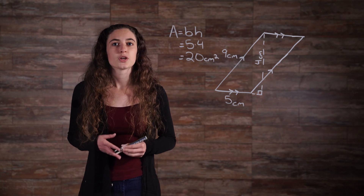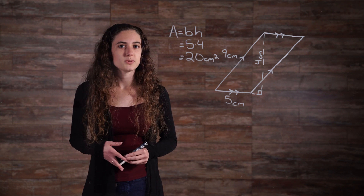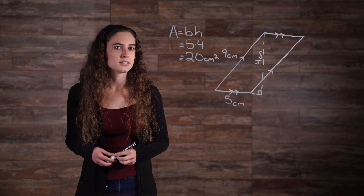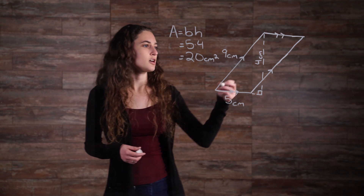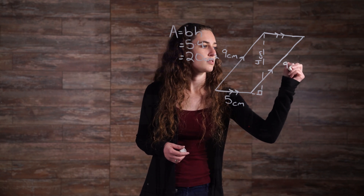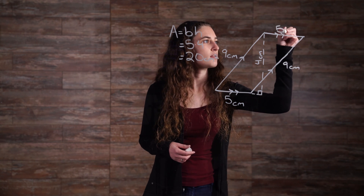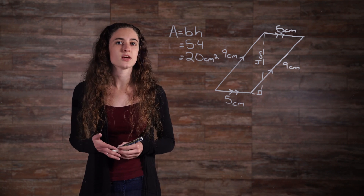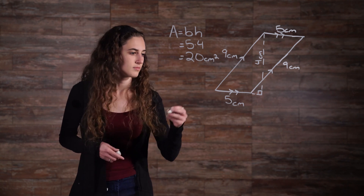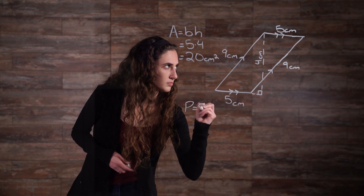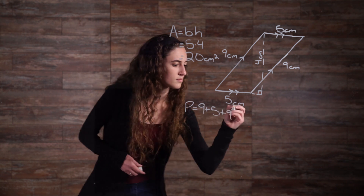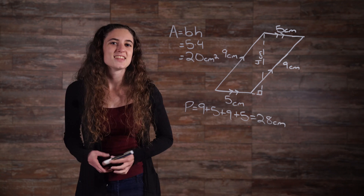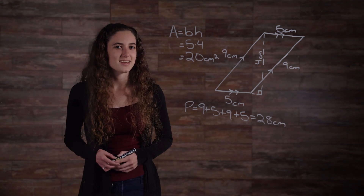To find the perimeter, we can write the measurements for the congruent opposite sides, so the right side is 9 cm and the top side is 5 cm. Then we simply add together all 4 sides. Thanks for watching, happy studying.